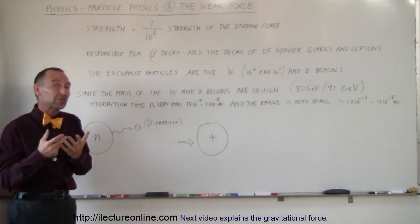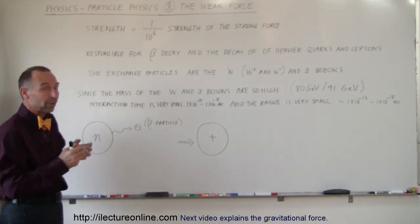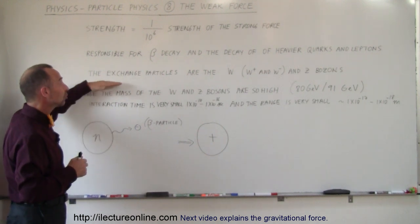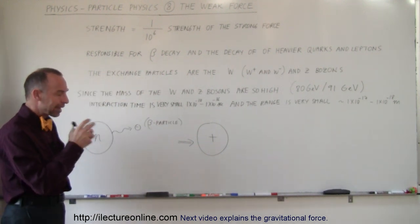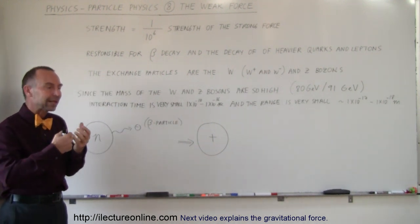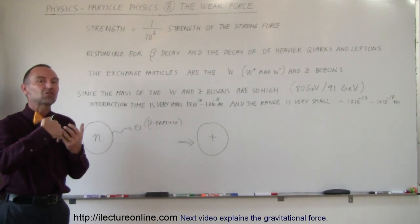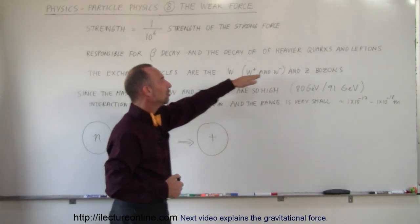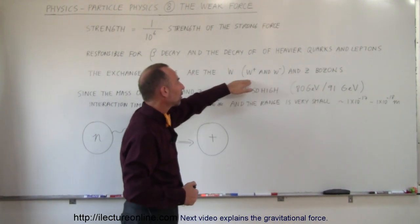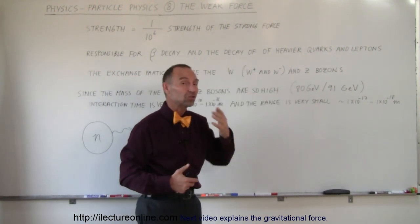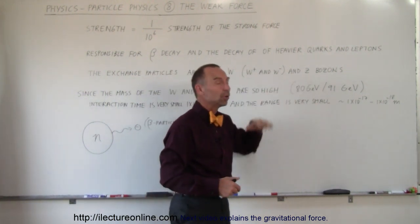This was back in the 1980s, so it wasn't that long ago, that we discovered that the interacting particles that create or that at least are the message carrier of the weak force are called the W and Z bosons. Now in the W bosons, we have a positive and negative charge type and then we also have the Z bosons.